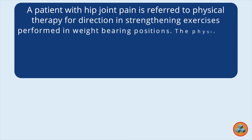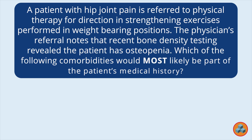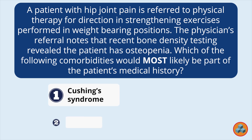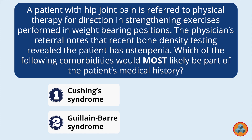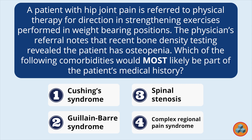A patient with hip joint pain is referred to physical therapy for direction and strengthening exercises performed in weight-bearing positions. The physician's referral notes that recent bone density testing revealed the patient has osteopenia. Which of the following comorbidities would most likely be part of the patient's medical history? 1. Cushing syndrome. 2. Guillain-Barré syndrome. 3. Spinal stenosis. 4. Complex regional pain syndrome.